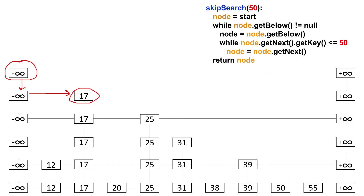Now that we can't go forward anymore, we're going to try and drop down a level. The below reference is not null — it holds 17. So now that we're down here, we go forward and ask: is 25 less than 50? It is, so we can go to this node. We can't go forward anymore because positive infinity is greater than 50.